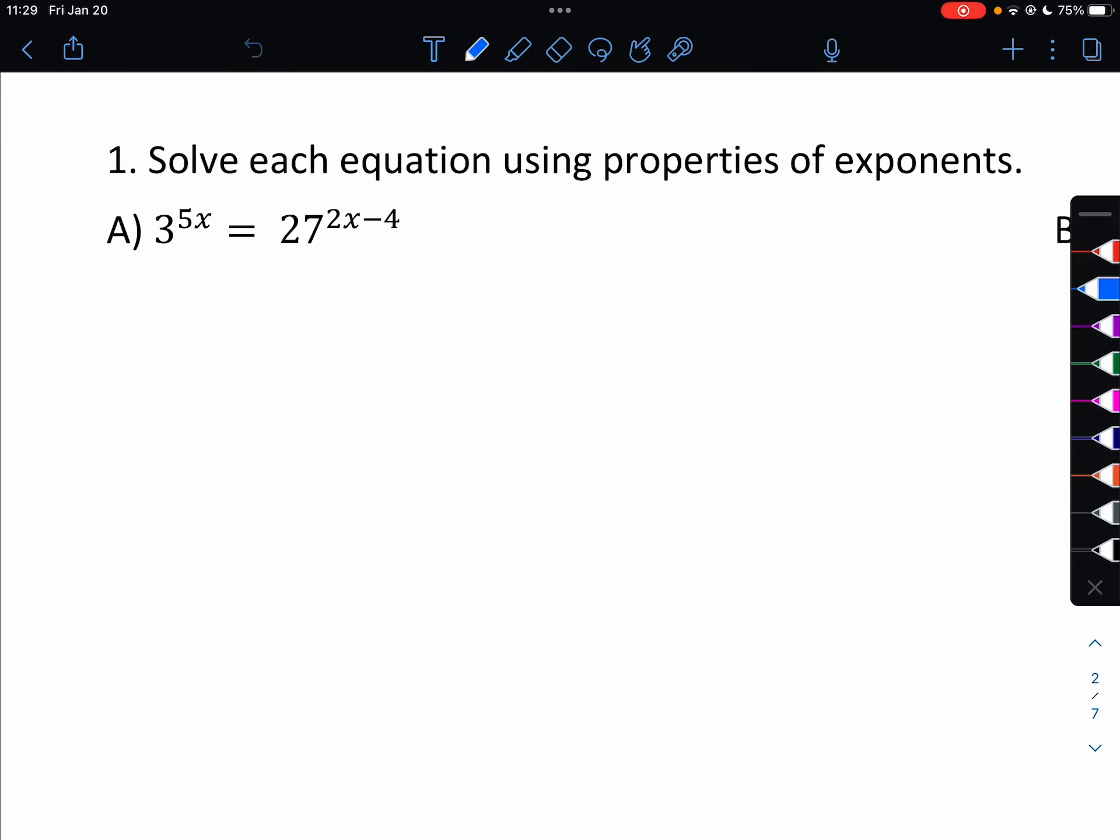So first one, we can see they're both powers of 3. So it's going to be 3 to the 5x, just like that on the left side. We'll change this there. On the right side, where it says 3 to the 3rd to the 2x minus 4. Now the bases are the same, so the exponents are equal to each other and solve. So 3 to the 20th would equal 27 to the 4th.